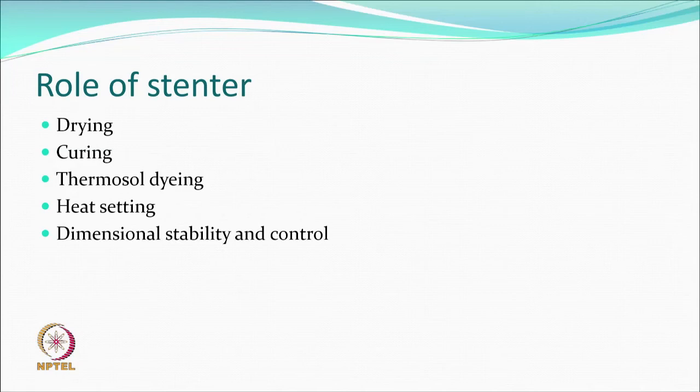The stenter takes the fabric through drying chambers and curing or polymerizing chambers where cross-linking takes place. There may be multiple drying chambers and multiple curing chambers since the temperature for curing is much higher than for drying. The stenter is also used for thermosol dyeing of disperse dyes at higher temperatures, and for heat setting of synthetic fibers to give dimensional stability. Synthetic fibers that want to shrink are allowed to do so in the stenter by bringing the chains closer.